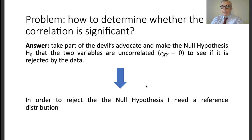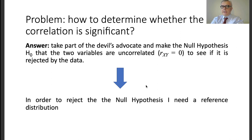To assess significance, we resort to statistical decision theory — we apply statistical tests. The idea is to play devil's advocate and formulate the null hypothesis H0: that the two variables are uncorrelated, so the true correlation coefficient equals zero. We then try to reject this null hypothesis using the observed data. To perform this, we need a reference distribution: we cannot reject the null hypothesis without one.